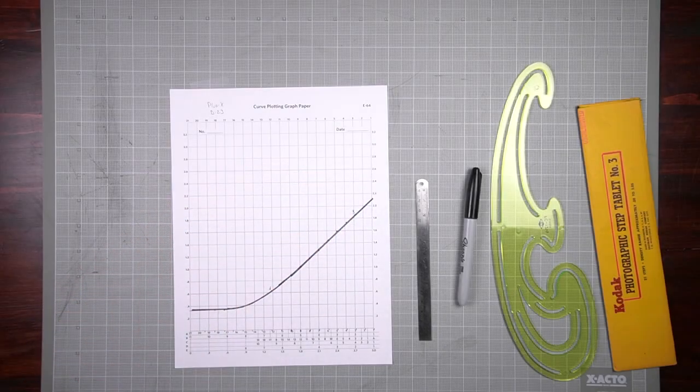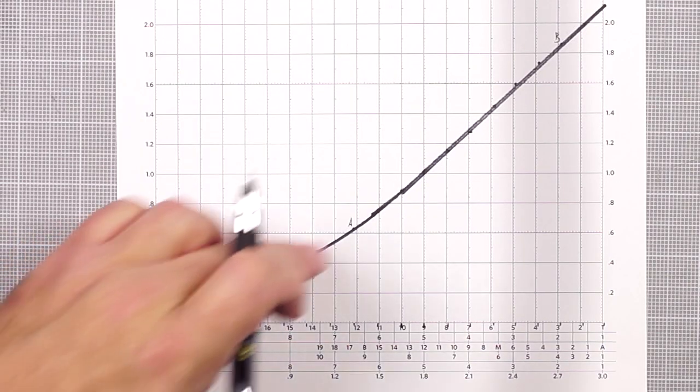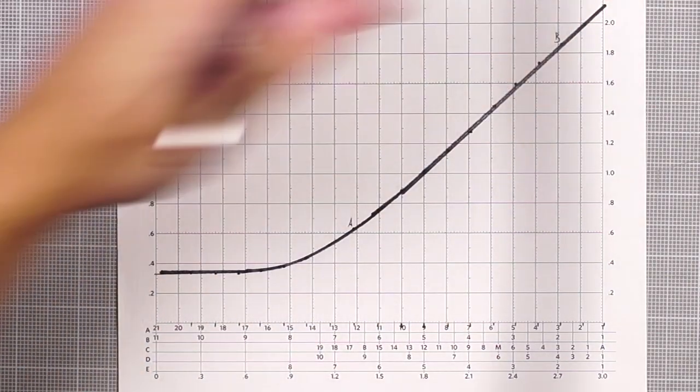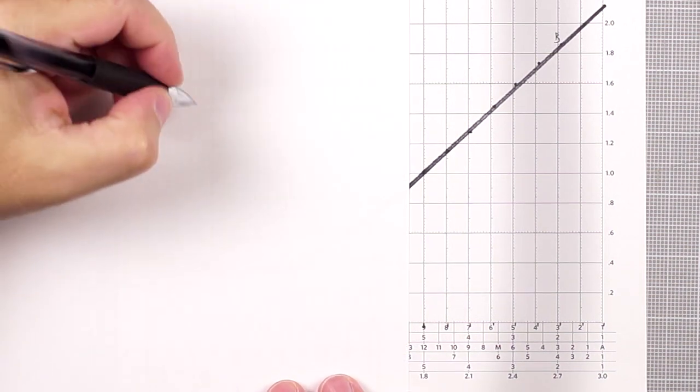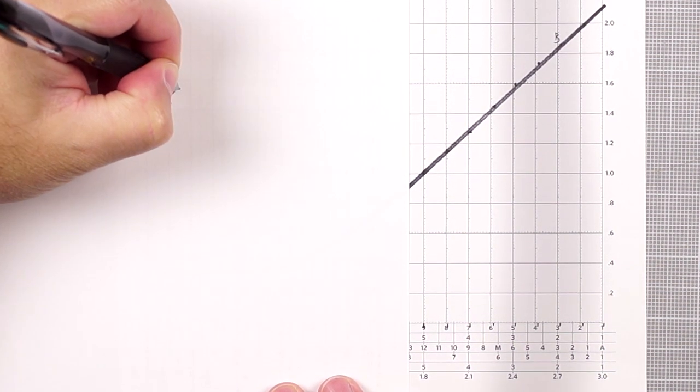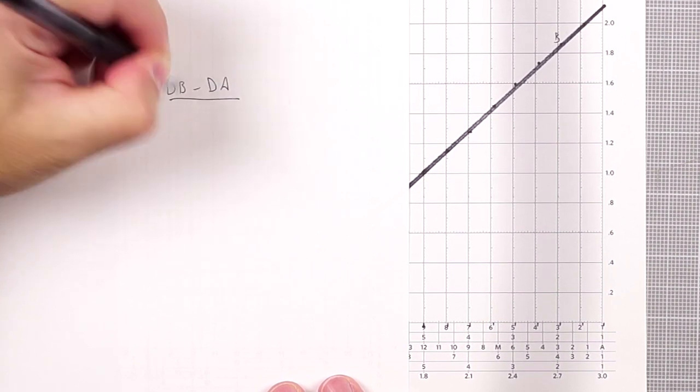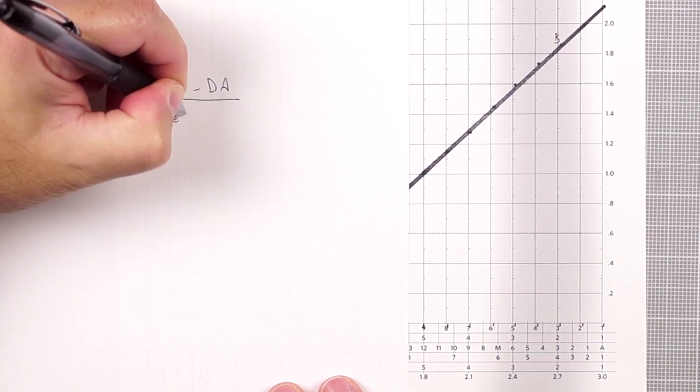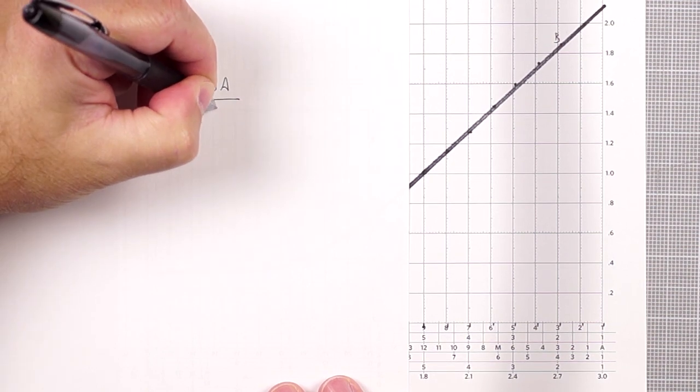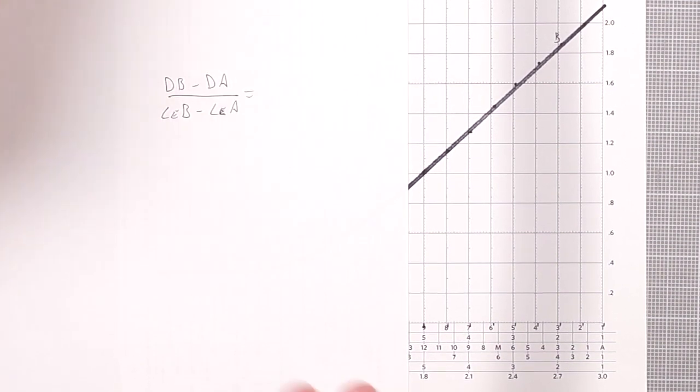So gamma is a measure of our straight line. It does not take into consideration the toe or the shoulder. The formula is very straightforward. It is density B minus density A divided by log exposure B minus log exposure A.